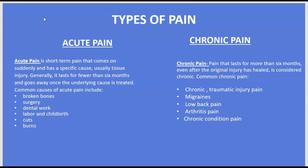Common causes of acute pain include broken bones, surgery, dental work, labor and childbirth, cuts, and burns. Chronic pain is a little bit different — this is pain that lasts for more than six months, even after the original injury has healed. That is when pain is considered to be chronic.